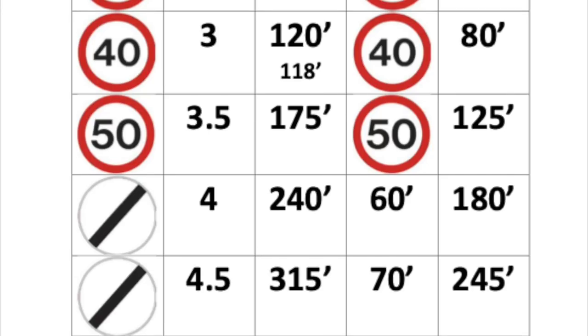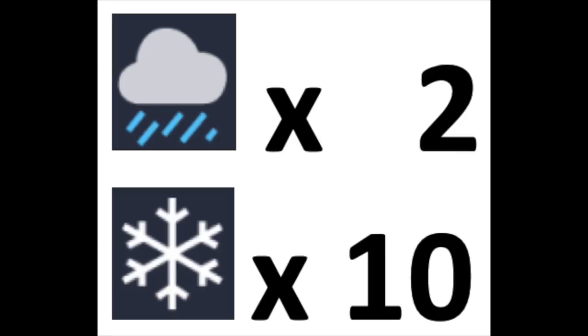Now all you have to remember is this: stopping distances are doubled in the wet, and they're multiplied by 10 in snowy or icy conditions.